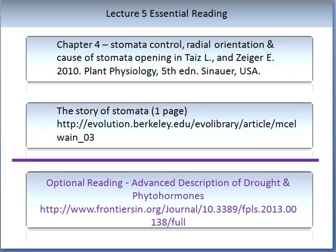The essential reading for this topic includes components of chapter 4 from the Taiz and Zeiger 2010 Plant Physiology recommended course textbook, covering three sections: stomata control, radial orientation, and the cause of stomata opening. The second article is found on the web — 'The Story of Stomata' — which outlines stomata evolution and its importance in modern agriculture. The third reading is optional, for those wanting to advance understanding of how phytohormones and drought control stomata, as it contains complex themes not required for completing this subject.